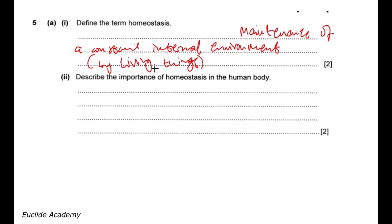So homeostasis is the maintenance of a constant internal environment by living things. Take for example body temperature — the body temperature has to remain around the normal body temperature. It doesn't have to go way above or way below the normal body temperature.